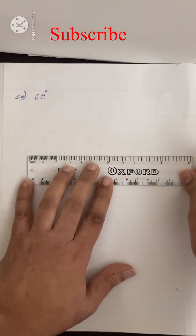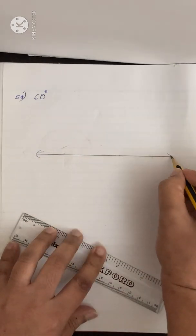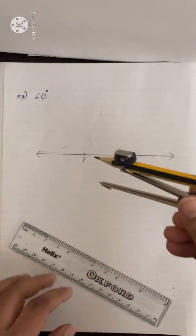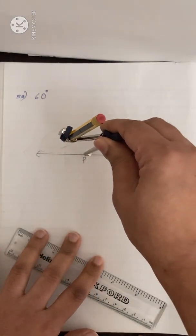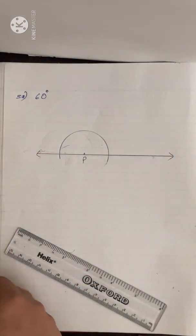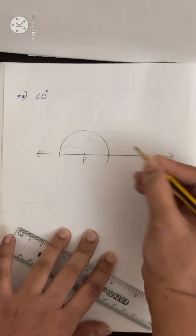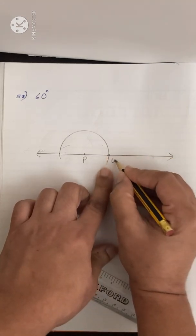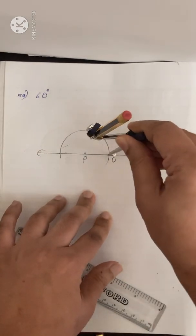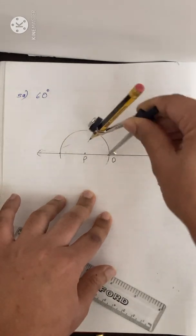First, draw a line and mark a point P on it. Now with P as center, take any convenient radius and draw an arc such that the two points of the arc cut on the line. Now let this point be O. Without changing the radius, with O as center, draw an arc such that it cuts through P.